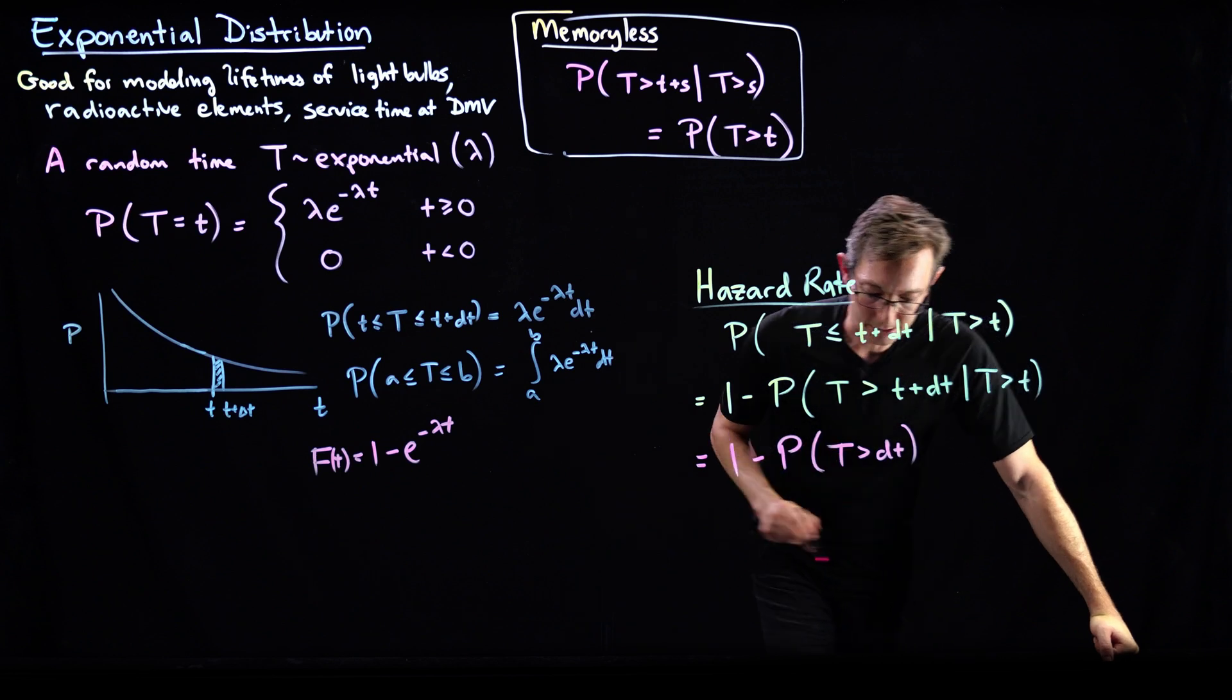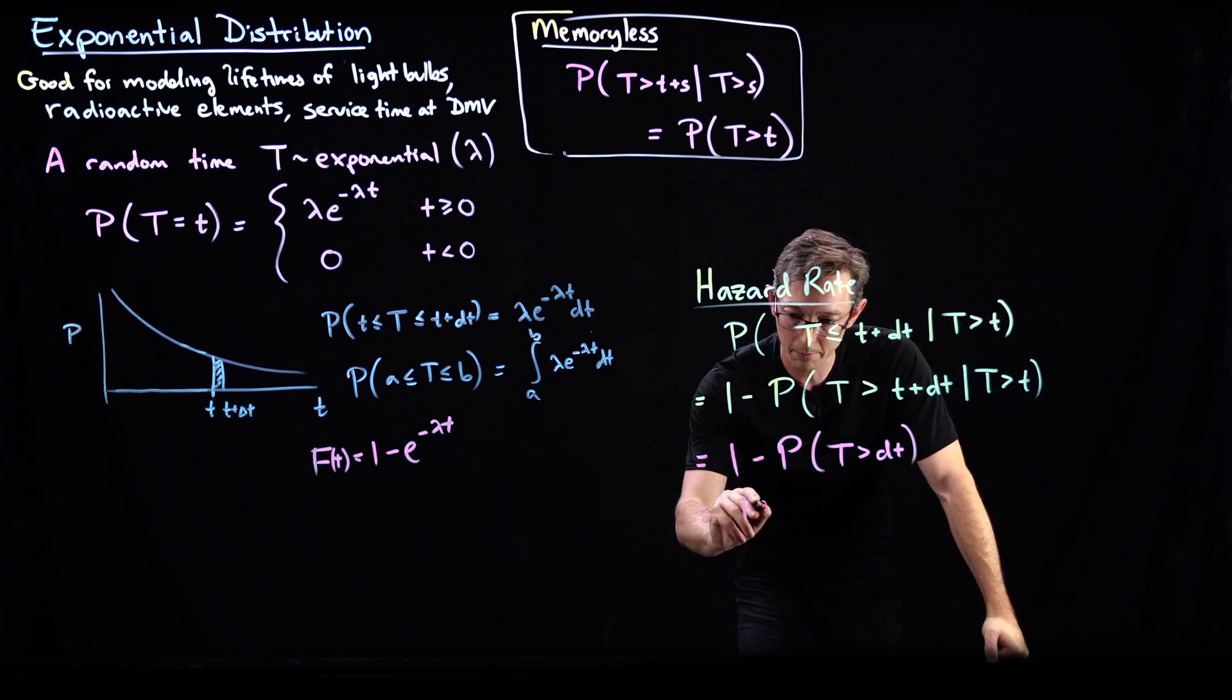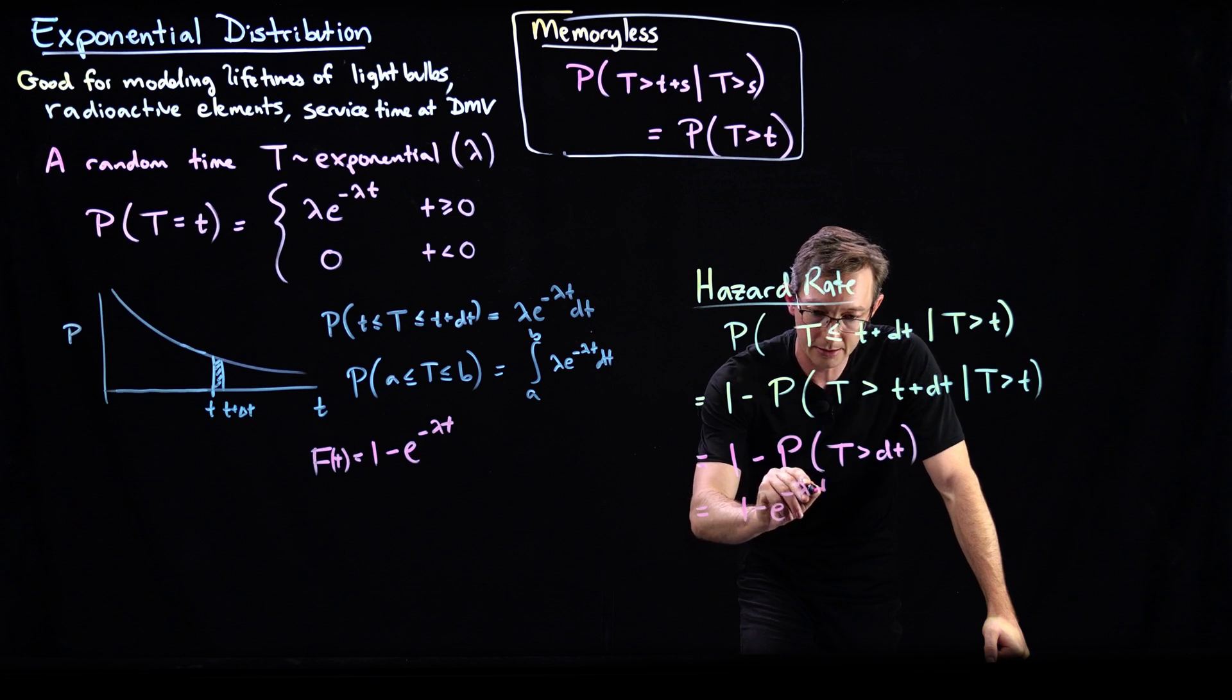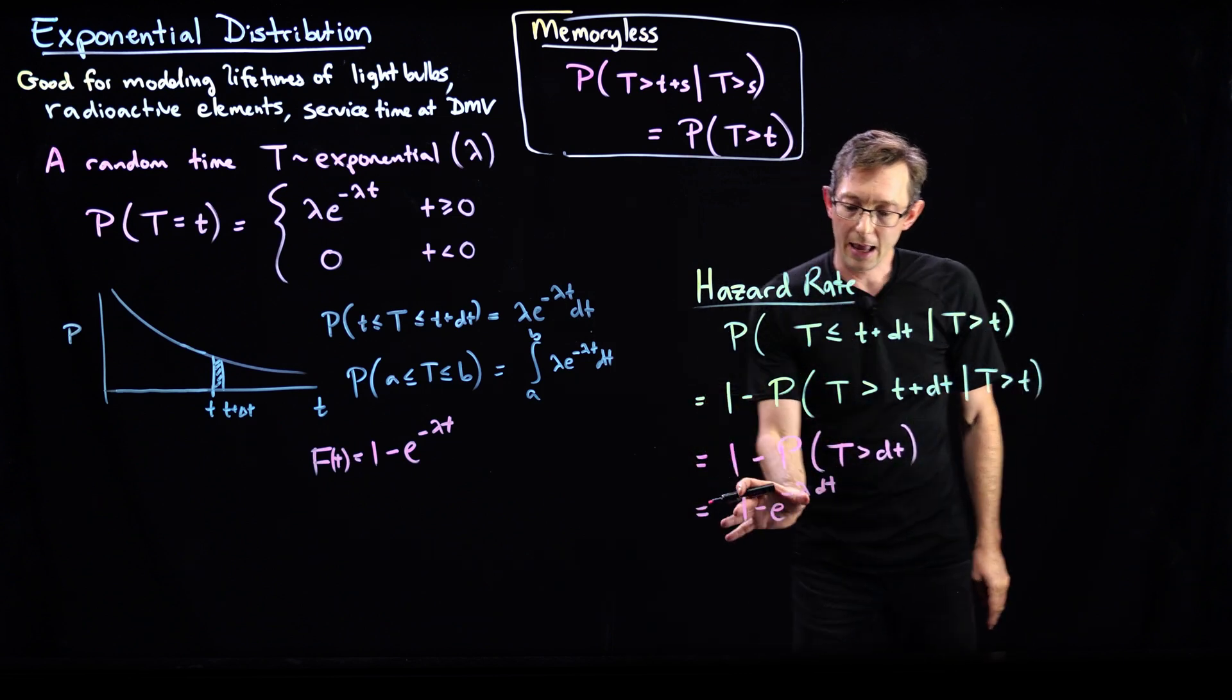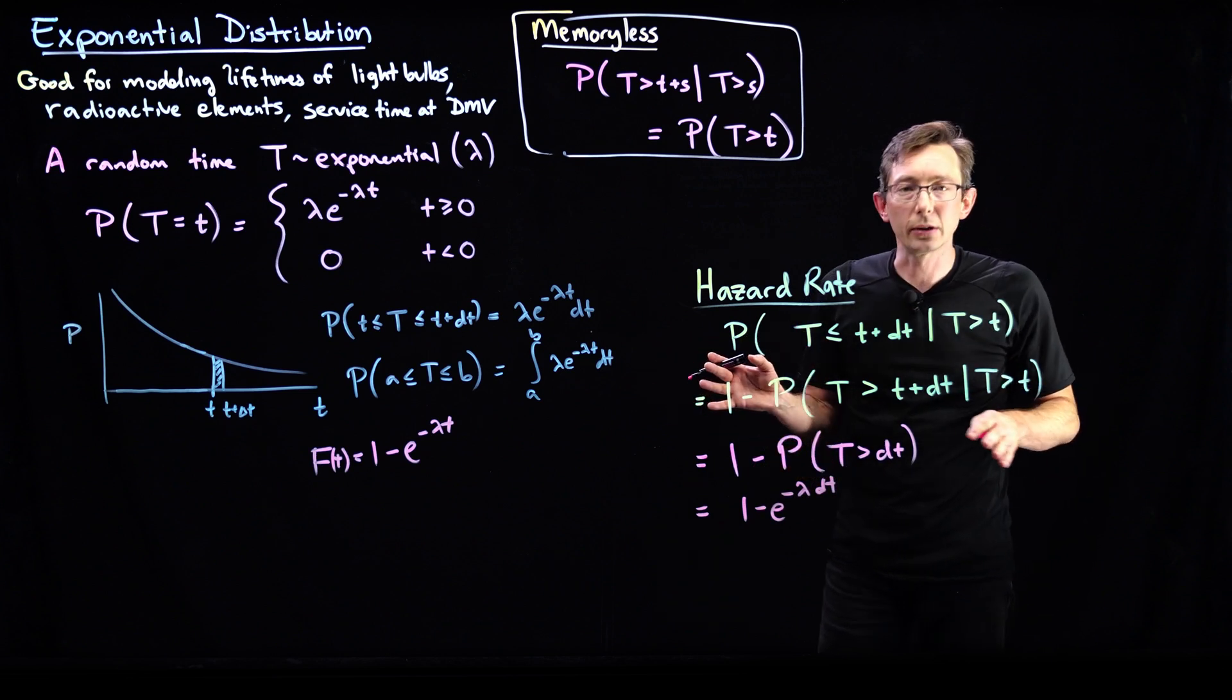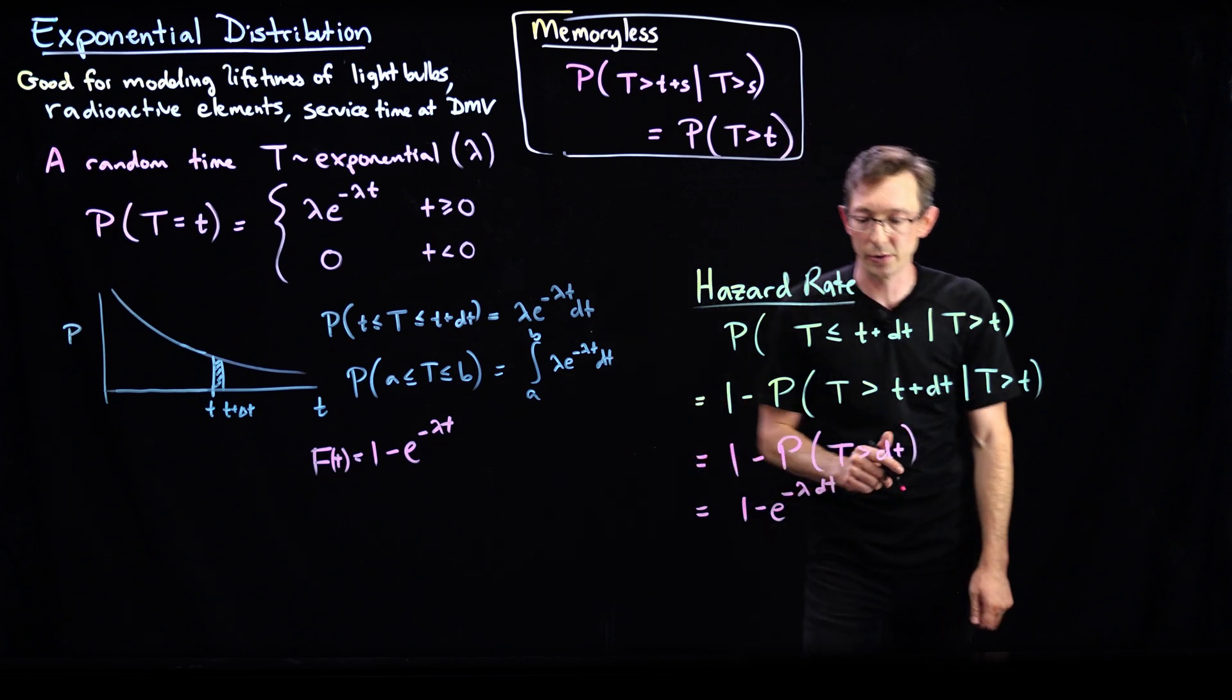And so I can write this out result, and this equals 1 minus e to the minus lambda dt. Okay. And we can stop here. That's totally fine. But there's a kind of manipulation you can do that makes this a little bit more useful.